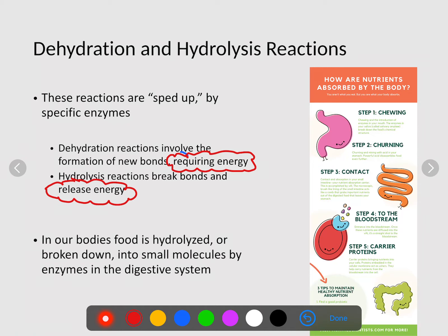Hydrolysis is most often found when you are breaking down sugars or foods. In our bodies, food is hydrolyzed or broken down into smaller molecules by enzymes in our digestive system. This is how we get energy. It goes from chewing to churning, contact to the bloodstream, carrier proteins, till eventually we get rid of it as waste.